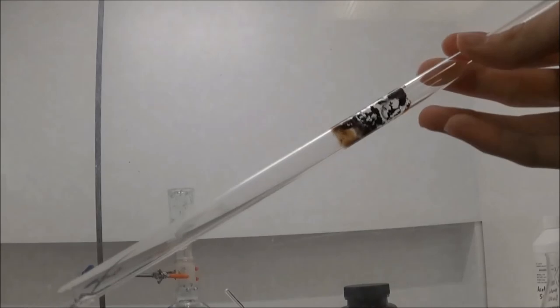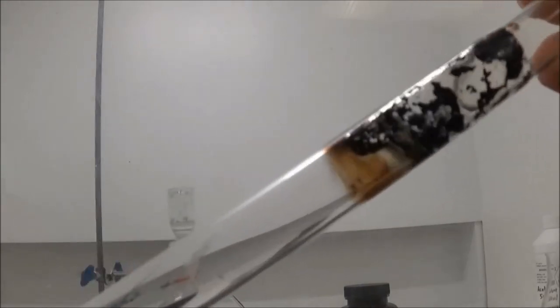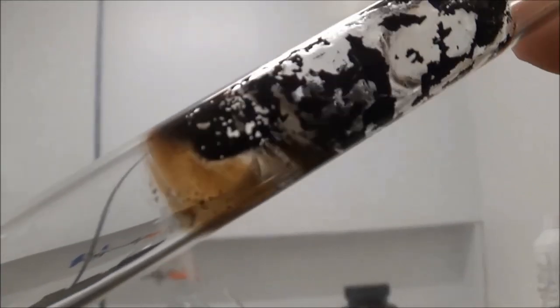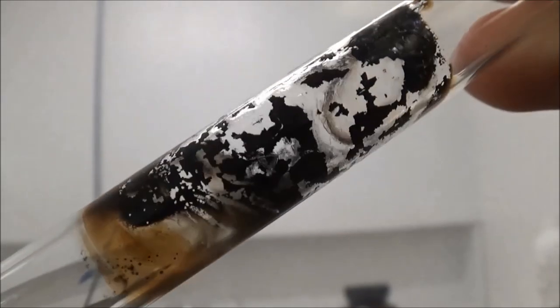I think the red-hot magnesium made magnesium silicide with the glass, which reacted with acid to make silane. My quartz tube was permanently damaged.